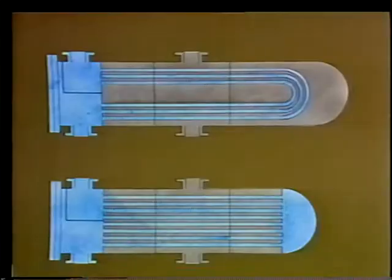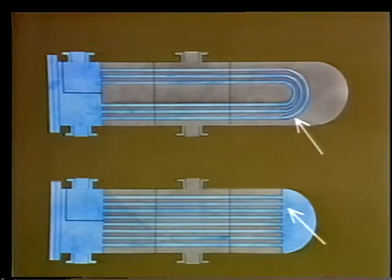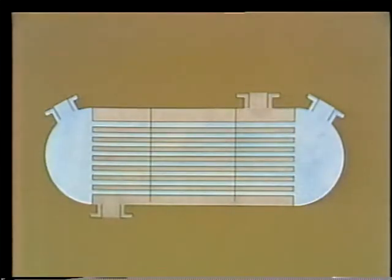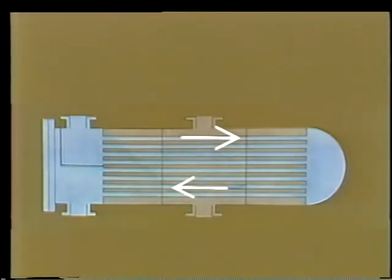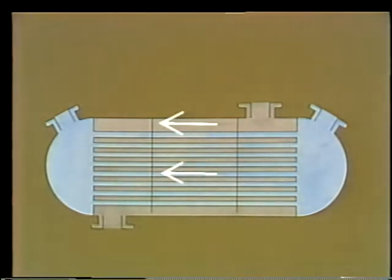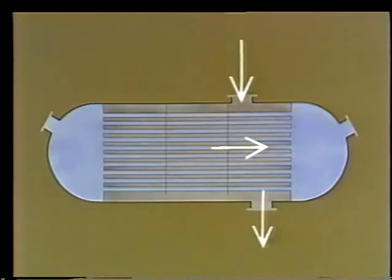Shell and tube heat exchangers come in several different arrangements. They may be either vertical or horizontal depending on space considerations. The way the tubes are arranged also differs — you may have straight tubes or U-tubes in a given unit. Flow through a shell and tube exchanger can be single or multi-pass for either or both of the fluids in the system. The two fluids can flow in the same direction called parallel flow, opposite direction called counter flow, or across one another called cross flow. The examples we'll be seeing have a number of different things flowing through them.